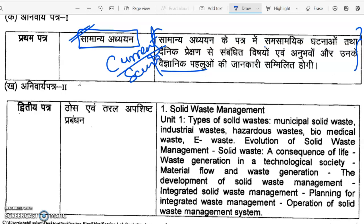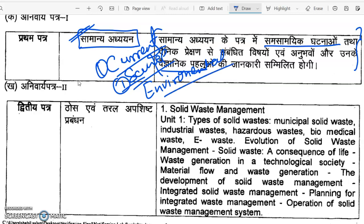General sciences will also be asked. The first is current affairs, the second is general sciences. The first is environmental, the second is general sciences, and the third is current affairs. You can read current affairs — there are many channels and many books you can follow for current affairs, especially for the Bihar exam.